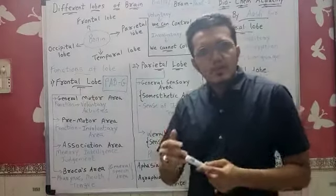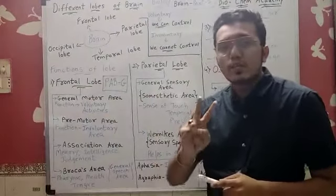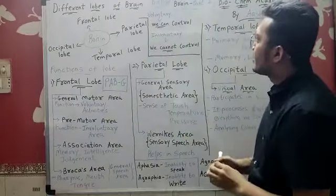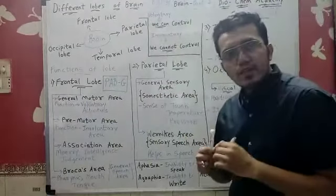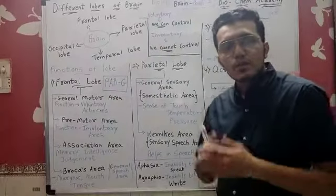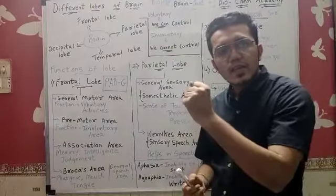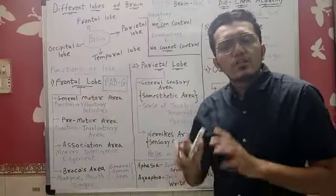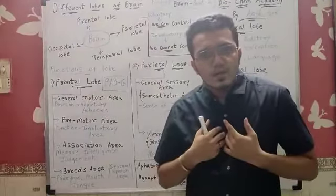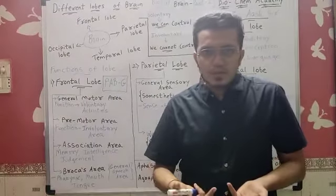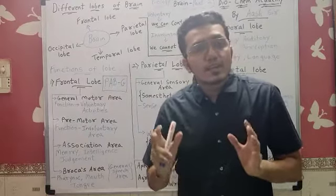One by one, what activities are controlled? General motor area: voluntary means the activity which our human body can control. For example, walking, talking, running, sitting, standing up, making a fist, picking an object, throwing a ball. So these activities are controlled by us. According to our need we can change it or perform it. That is called voluntary activity.